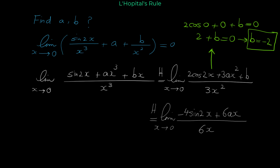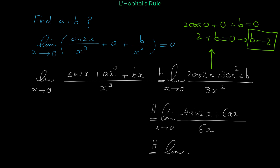Substituting 0 again, 0 makes the denominator 6x equal to 0, and it also makes the numerator 0 (sine of 0 is 0, and 6a times 0 is 0). We still have 0 over 0, so we apply L'Hôpital's rule a third time. The derivative of negative 4 sine 2x is negative 8 cosine 2x (chain rule: derivative of sine is cosine, derivative of 2x is 2, giving coefficient negative 8). The derivative of 6ax is 6a, and the derivative of 6x is 6.